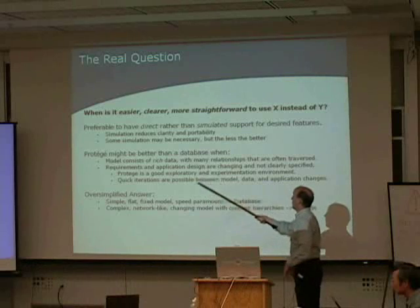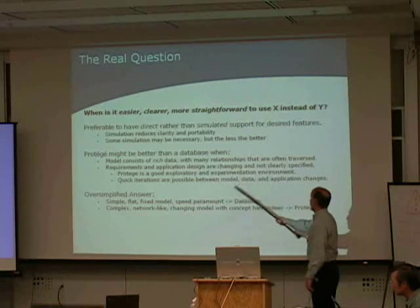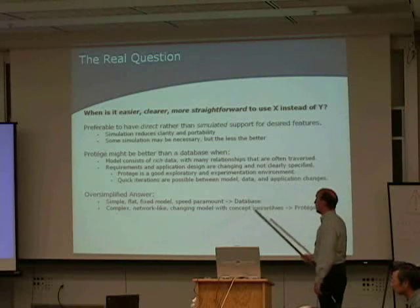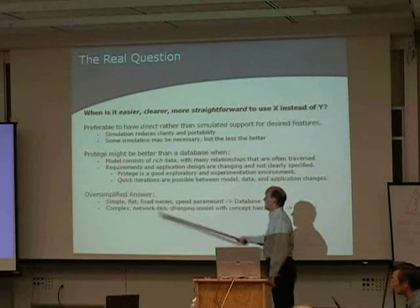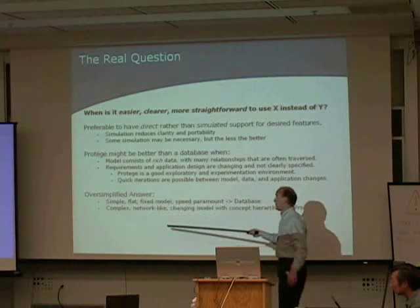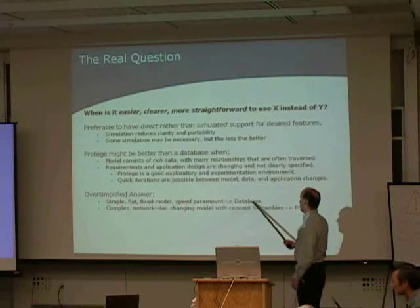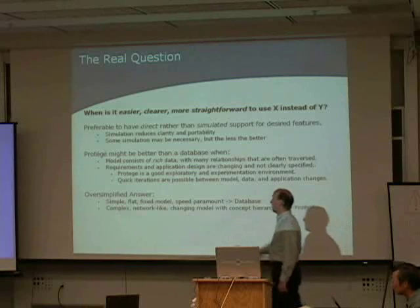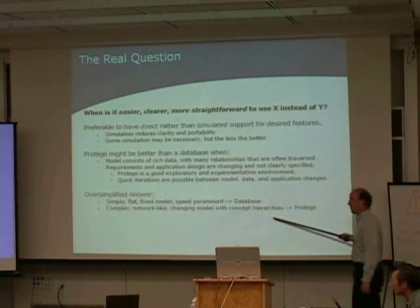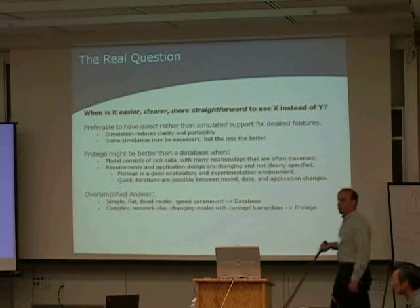Protégé is particularly good at exploration and experimentation — quick iterations are possible across the model, data, and application design. The simplified answer is: if you have a simple, flat, or fixed model like the newspaper example, and speed is really important to you, then a database should be used. If you have a complex, network-like, changing model — and particularly if you have hierarchies that you'd like to deal with — then you should at least consider using Protégé.